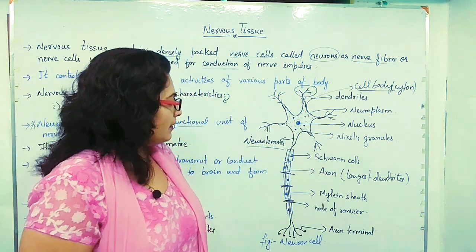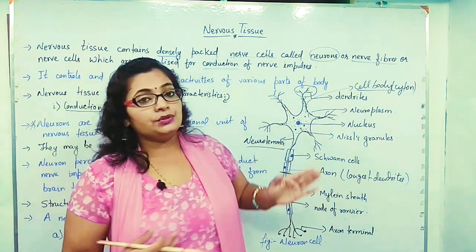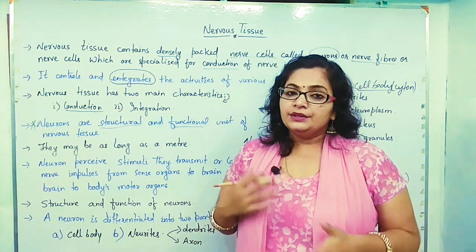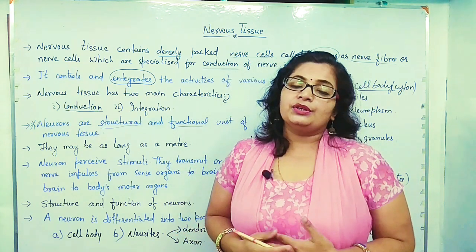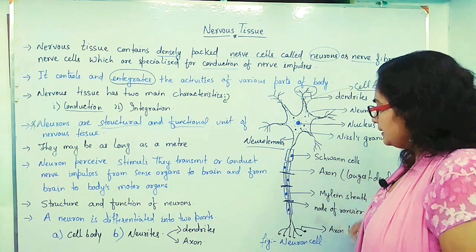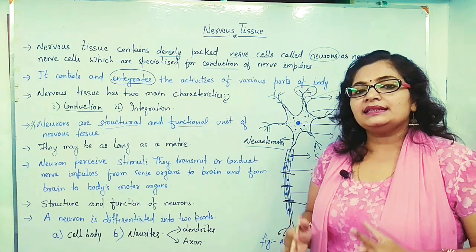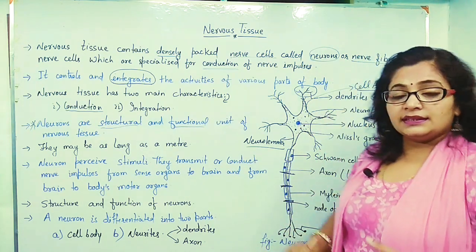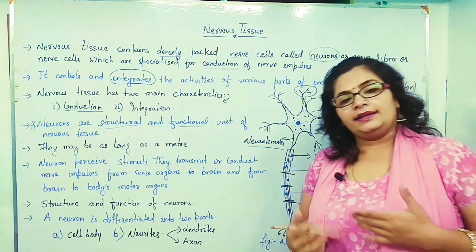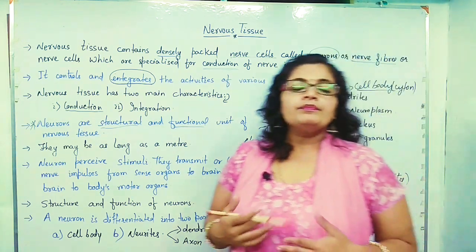This was our brief discussion about nervous tissue and about neurons. Neurons are the structural and functional unit of nervous tissue. The diagram of the neuron is very important and is the same diagram you can see in board exams. This diagram is about nervous tissue. Thank you.